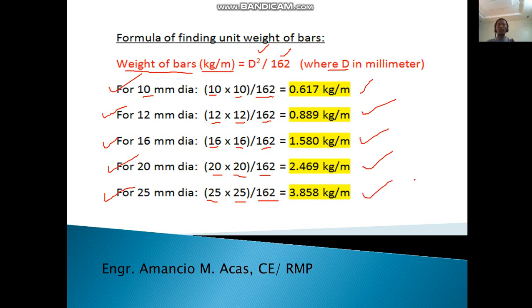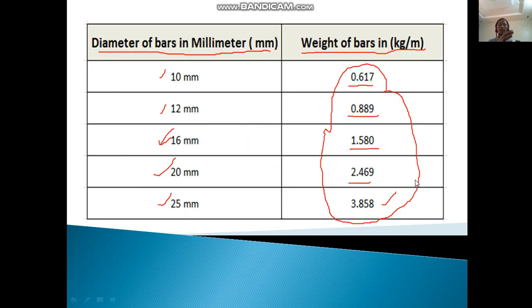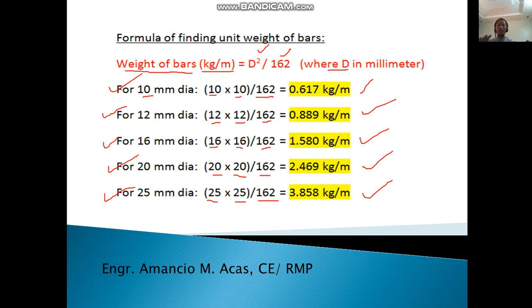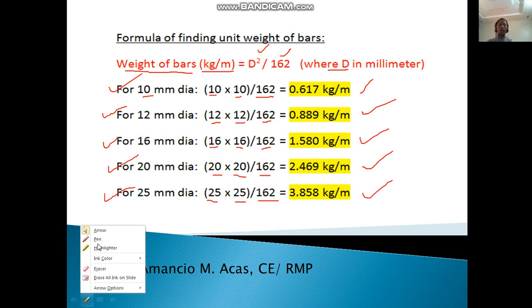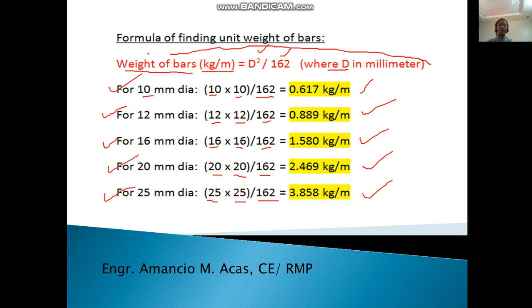If we see the table above, the value is just the same. So it means that is the formula that we are going to use for finding the unit weight of bars. Remember this formula because this is very important: weight of bars equals D squared divided by 162, where the diameter is in millimeter.